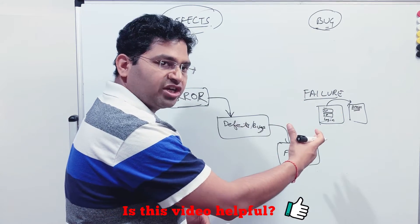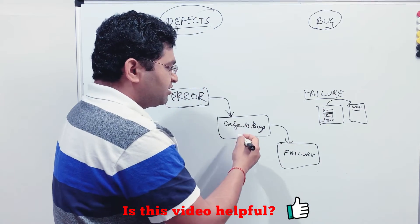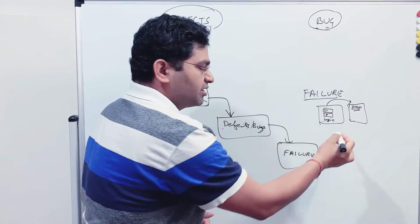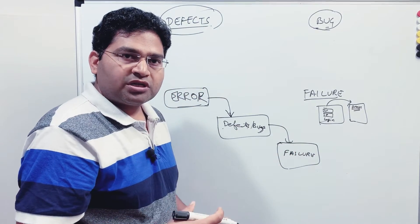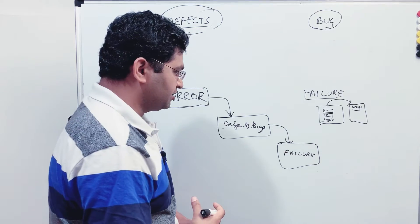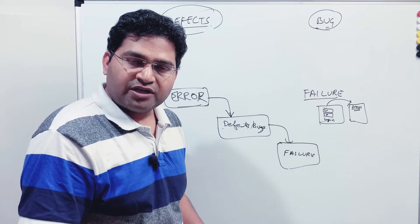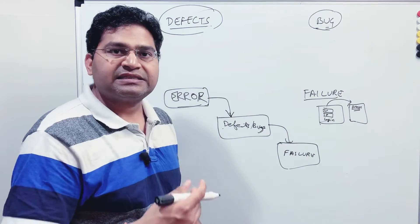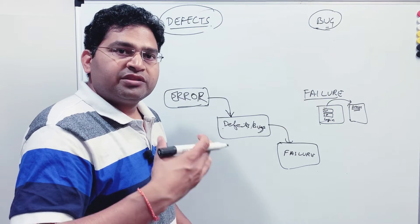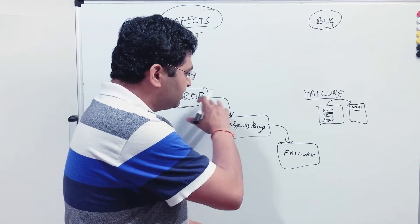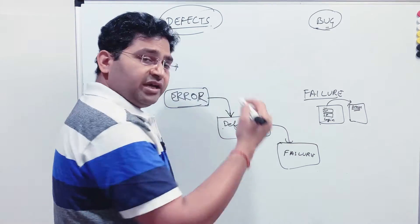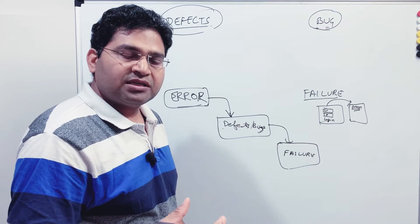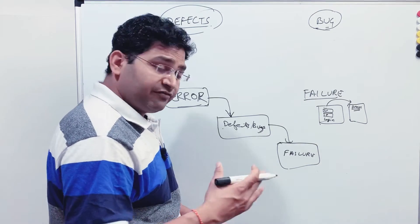The code error resulted in a defect — the actual result is that I'm not redirected to the dashboard page, which is not the expected result. That defect caused the failure of not logging in successfully and reaching the dashboard. Failure is the failure to achieve what you're supposed to from the application — like a blue screen in Windows, which is a failure caused by an error in the operating system code.